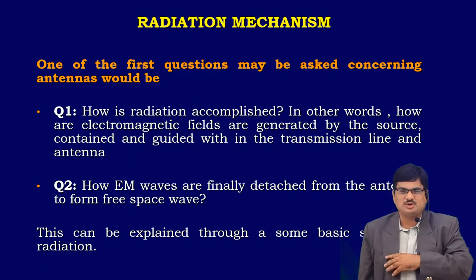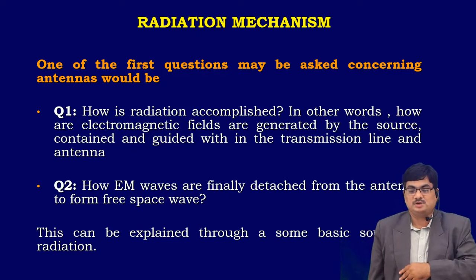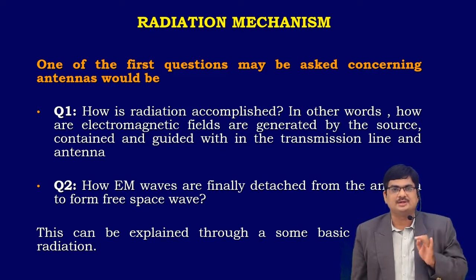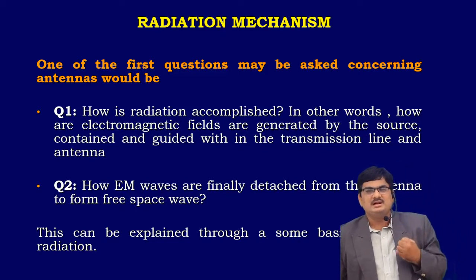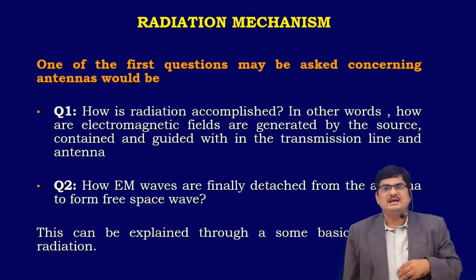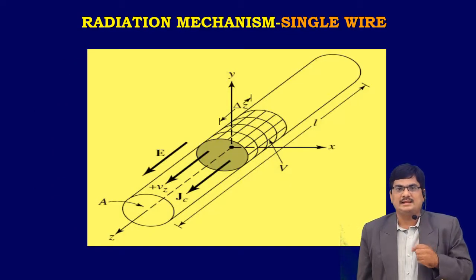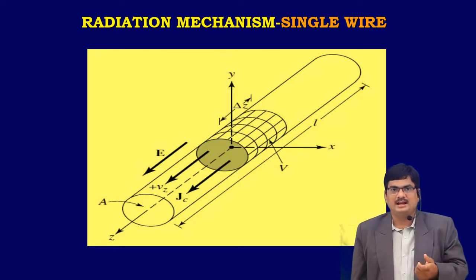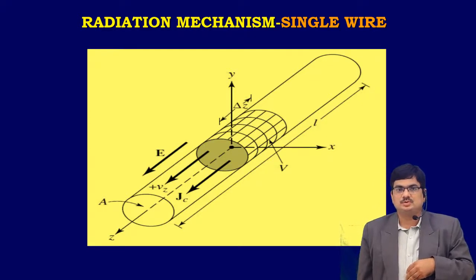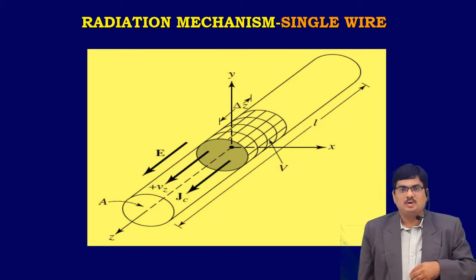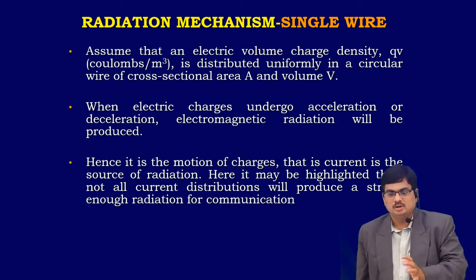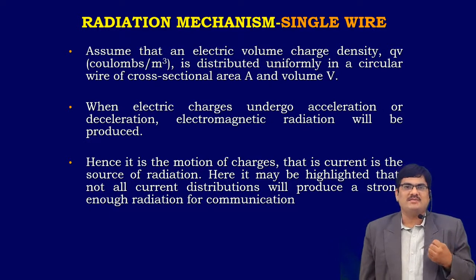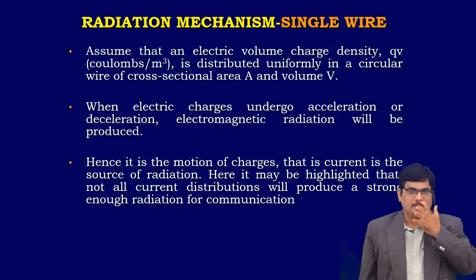The first question when asked about antennas is: how will an antenna radiate, what is radiation, and how will it be radiated in a single wire antenna? For the basics of radiation, we take a single wire antenna — a cross-sectional circular wire antenna with area A and volume V. The charge of this antenna is Q. We assume the electric volume charge density Qe, in Coulombs per meter cube, is distributed uniformly in a circular wire of cross-sectional area A with volume V.